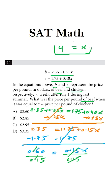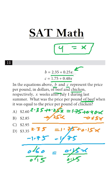But X = 4 is not the final answer. We have to plug 4 back into one of the equations to get the price. 0.25 times 4 means one quarter of 4, which is 1, plus 2.35 gives us 3.35. That is choice D — our answer is $3.35.